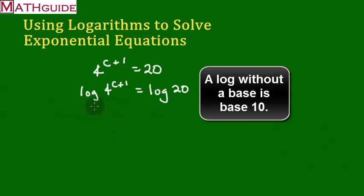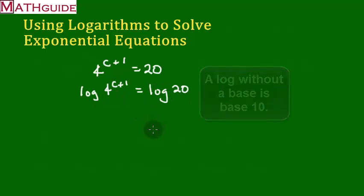But if you don't write the base, it turns out that that's base 10. So this is the common log, it's log base 10. This is log base 10 of 20, but if it's log base 10, we don't have to write the base. That's how that works.